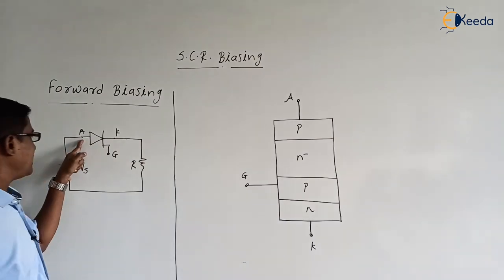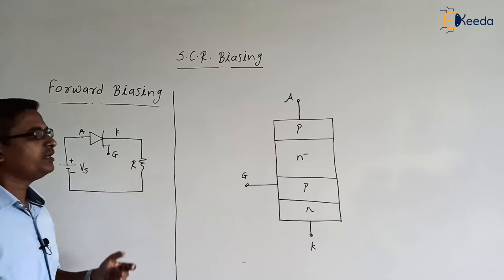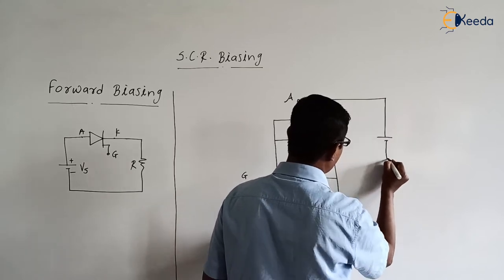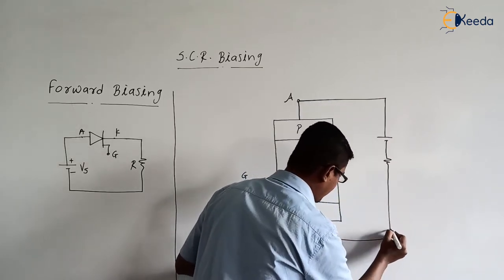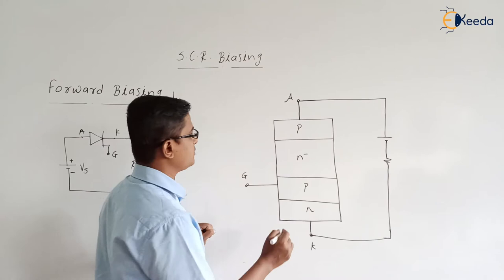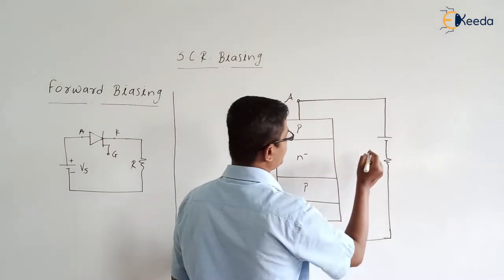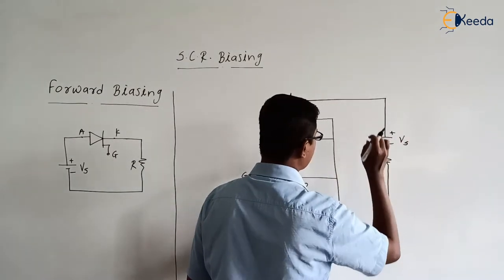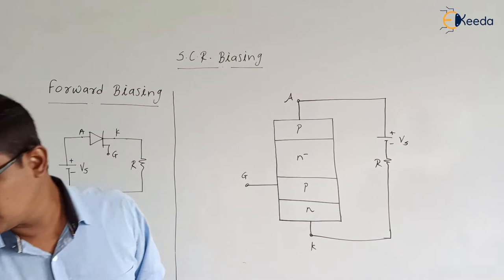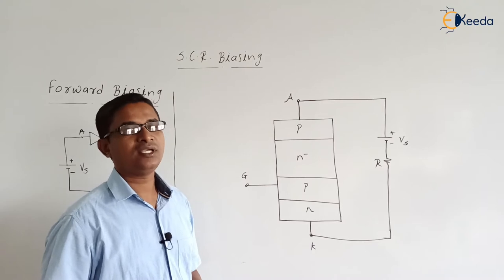The anode of the SCR is connected to the positive plate of the supply and the cathode, through the load, is connected to the negative plate. With the gate terminal kept open circuit, initially the device is in the off state because the depletion layer widths are non-zero. So the current flowing through the circuit will be zero, and therefore the current through the load is also zero.